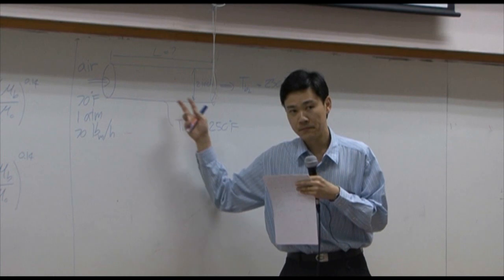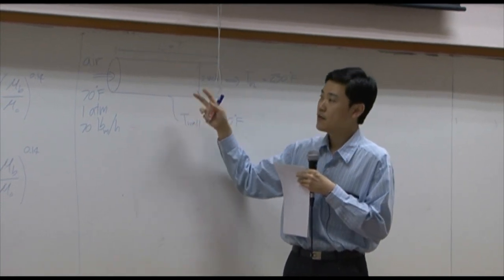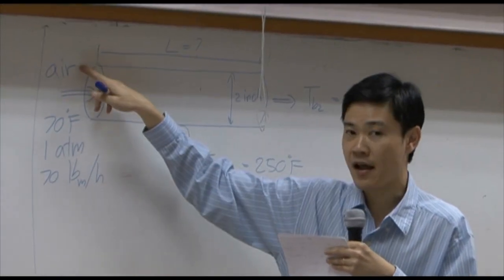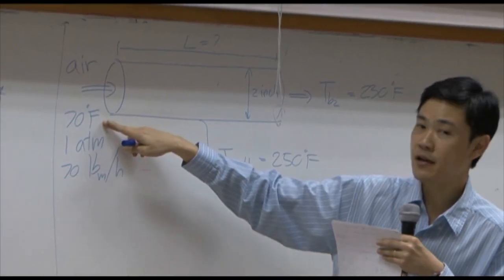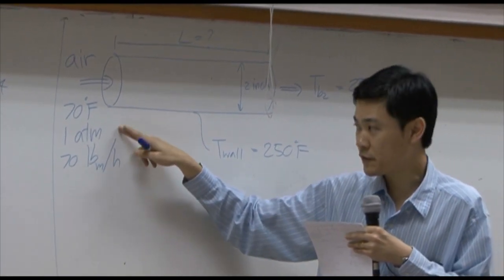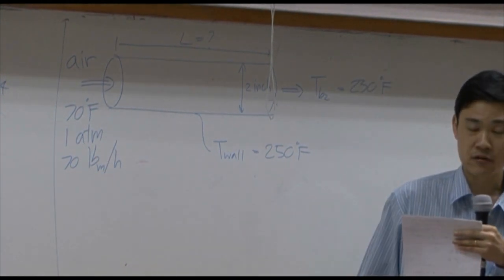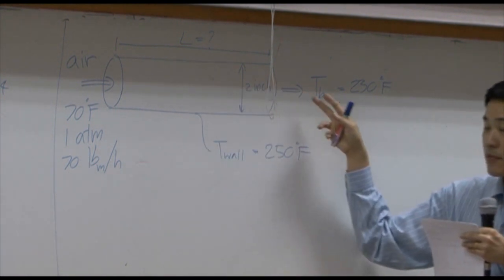Suppose you have a circular pipe. The input fluid into the pipe is air at 70 degrees Fahrenheit, one atmospheric pressure, and the flow rate is given as 70 pounds per hour flowing into the pipe.